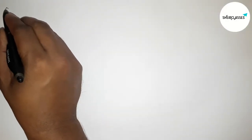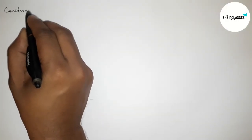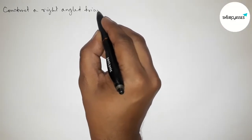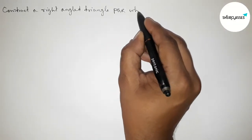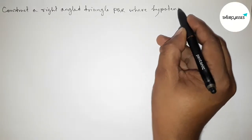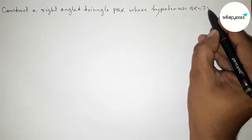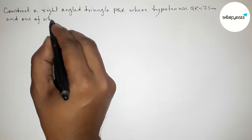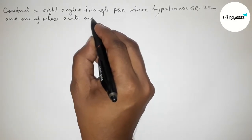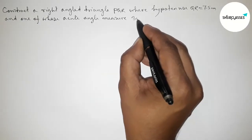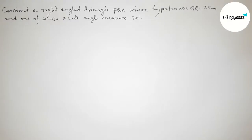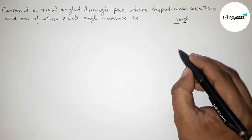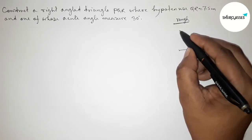Hi everyone, welcome to Essay Share Classes. Today in this video we have to construct a right angled triangle PQR where the hypotenuse QR equals 7.5 centimeters and one of the acute angles measures 30 degrees. I am going to construct this right angle triangle in an easy way, so please watch the video till the end. Let's start — first I'll discuss some important calculations.